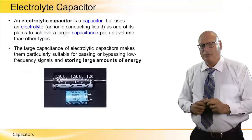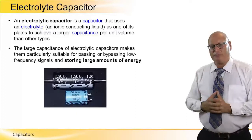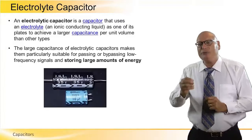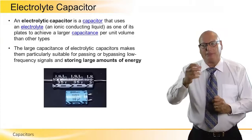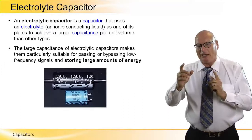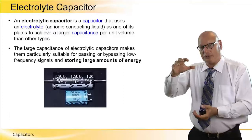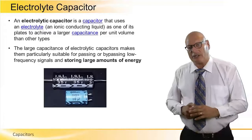When we talk about capacitors, we basically talk about two families. Number one: the electrolytic capacitor. An electrolytic capacitor is a capacitor that uses an electrolyte — an ionic conducting liquid — as one of its plates, to achieve a larger capacitance per unit volume than other types. The large capacitance of electrolytic capacitors makes them particularly suitable for passing or bypassing low frequency signals, and for storing large amounts of energy — charged to high voltage and then discharged through a resistor.